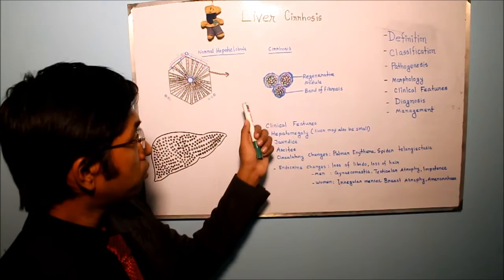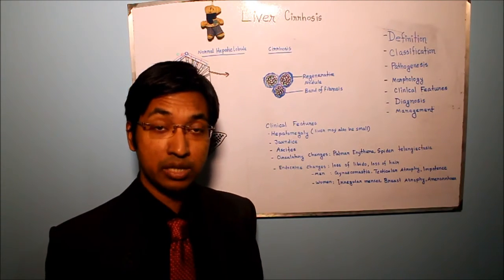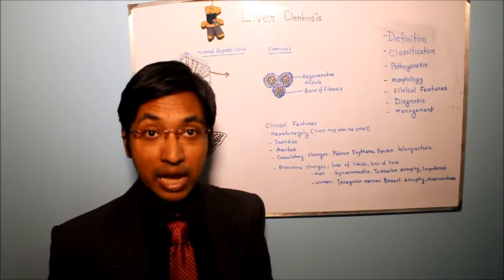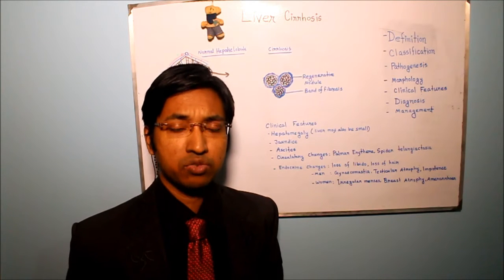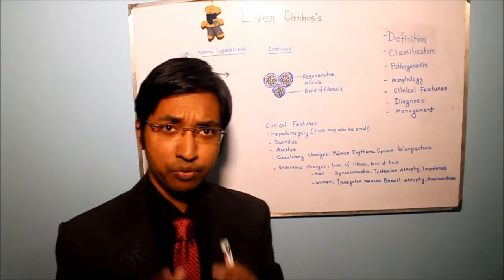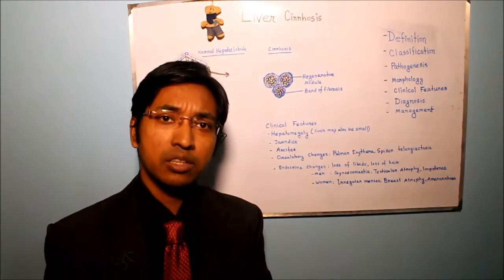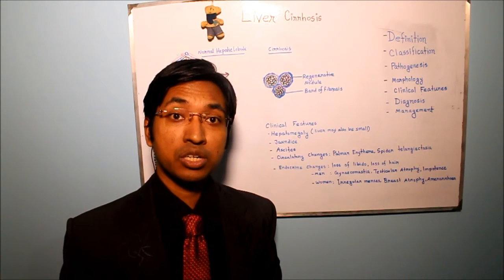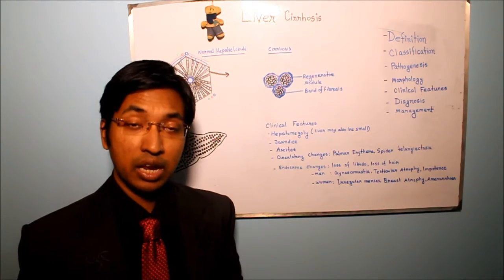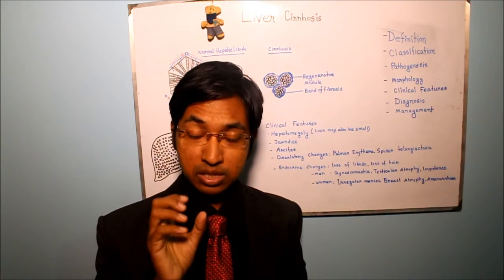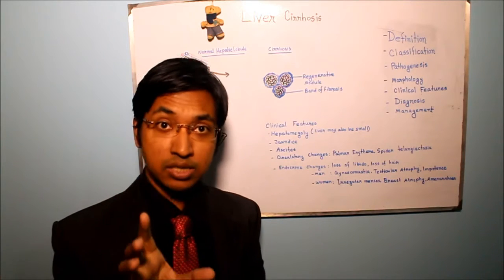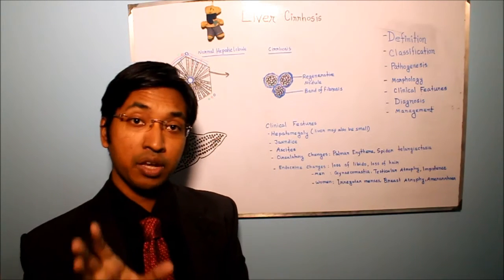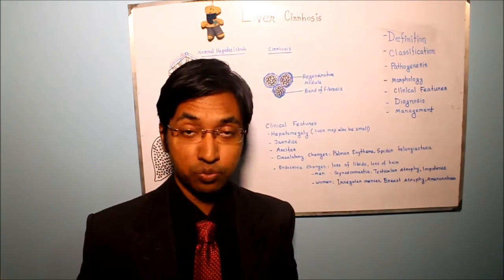Who is responsible for the fibrosis? We discussed this in the previous video. To summarize, the hepatic stellate cell located in the space of Disse is responsible for the fibrosis. Following persistent liver injury, the hepatic stellate cell becomes activated and gets transformed into myofibroblasts. As the name implies, myo means it has contractile property, and fibroblast means it is fibrogenic. So hepatic stellate cells become converted into myofibroblasts, and that is responsible for fibrosis.